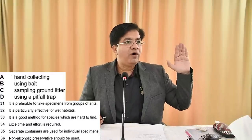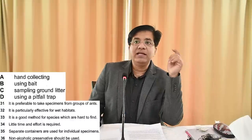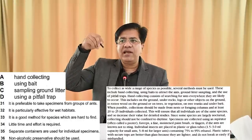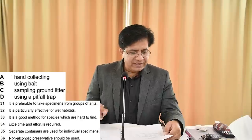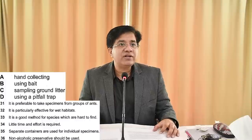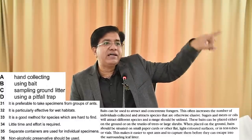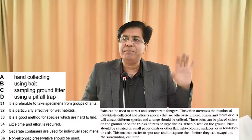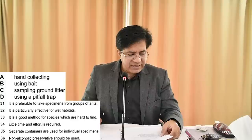First of all you have to locate option A: hand collecting. Go back and find it — second paragraph — underline the word 'hand collecting' and write capital A there. Now the second method: using bait. Look for the word 'bait' or 'baits' — third paragraph, first word — underline or encircle it and write capital B.